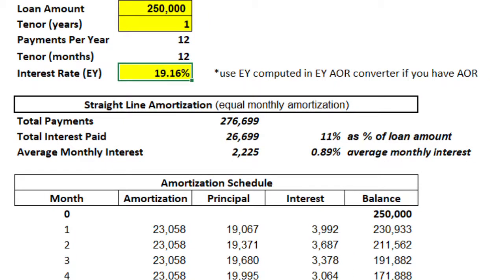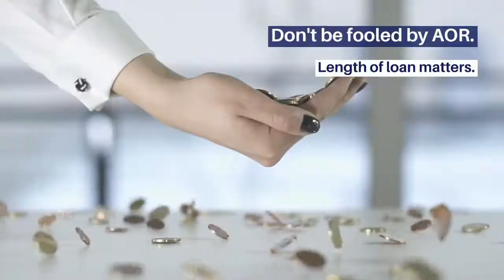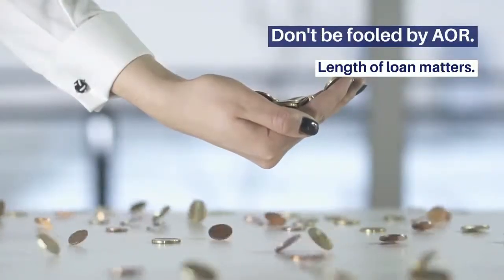Suppose you want a shorter loan tenor, say 12 months — the 0.89% AOR will be equivalent to 19.16% EY. Wait, the EY is even higher than a 36-month tenor? As a percentage yes, but since the tenor is shorter, the total amount of interest to be paid in peso terms is definitely less for a 12-month tenor than a 36-month tenor. Here's the sample amortization table for a 250,000 loan at 0.89% AOR, equivalent to 19.16% EY, at 12 months tenor. Notice that total interest paid in a 36-month tenor for the same loan amount of 250,000 and same AOR at 0.89% is 80,000, whereas if you only pay it in 12 months, interest is less than 27,000. So here you see that you should not be fooled by low AOR. In this case, length matters.